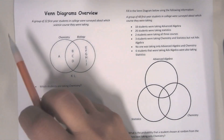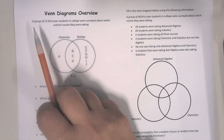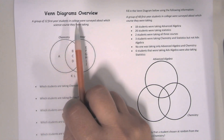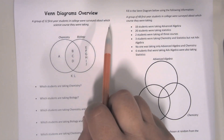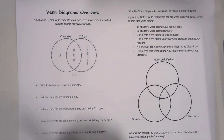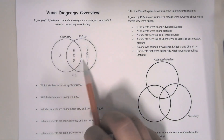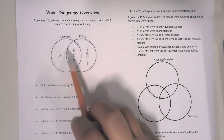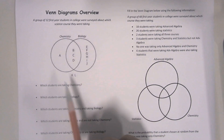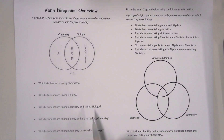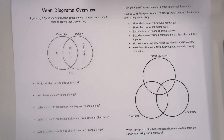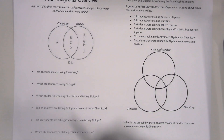So first off, a group of 12 first-year students in college were surveyed about which science course they were taking. We've got chemistry in this circle and biology in this circle. We're going to go through these questions down here that are going to explain how we organize information in a Venn diagram.